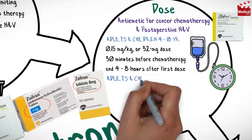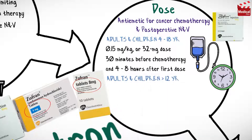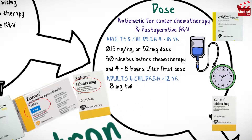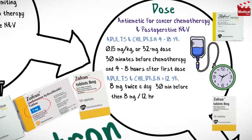For adults and children older than 12 years, the usual oral dose is 8 mg twice a day, starting 30 minutes before chemotherapy, and administer the next dose 8 hours later, then 8 mg every 12 hours for 1 to 2 days after chemotherapy.